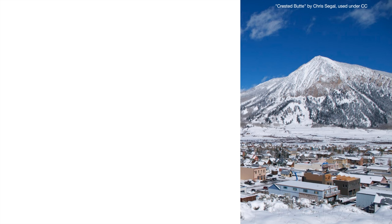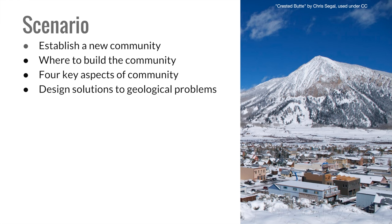For this project, our second grade students were provided the following scenario: the leaders of a group have found new land and have been tasked to establish a community. They must decide where to build their community, ensure that their plans include the four key aspects of a community — to live, work, play, and solve problems — and make design solutions to problems their community may face that are caused by the land's fast and slow changes.